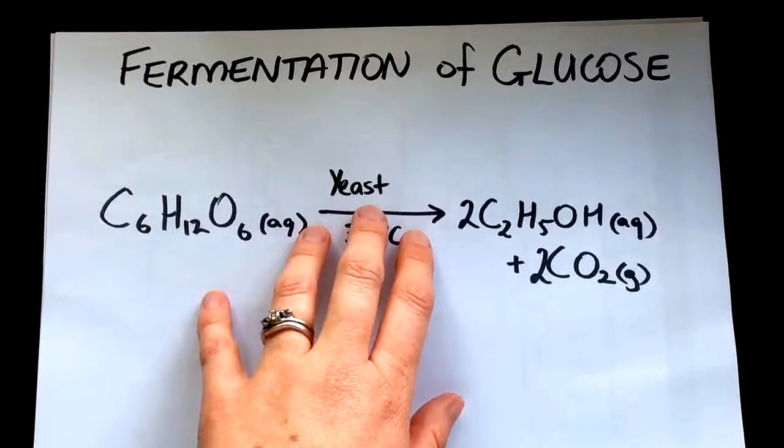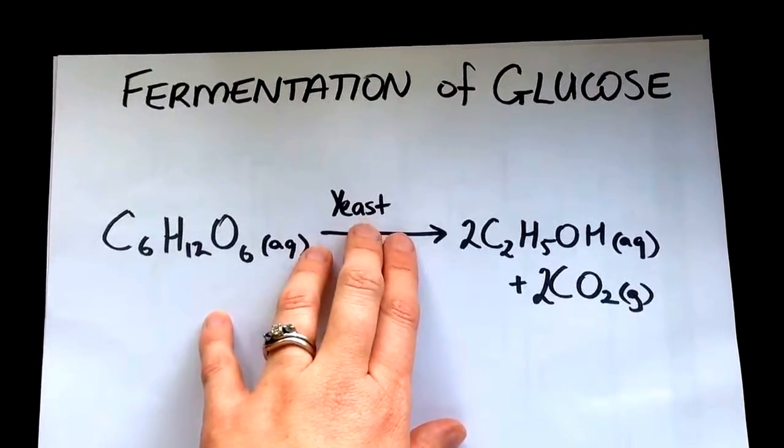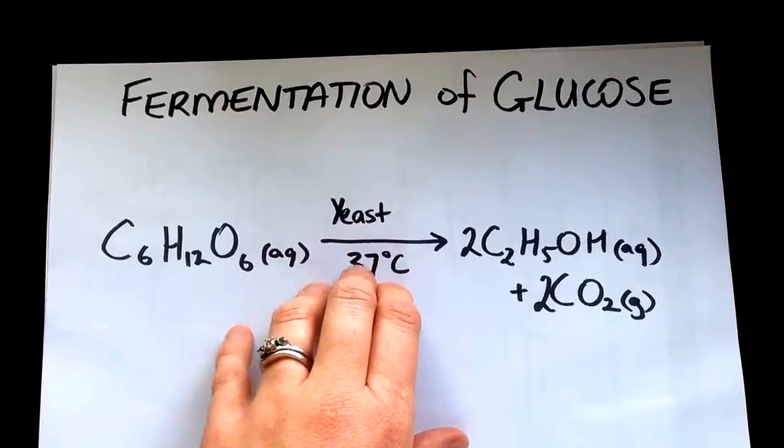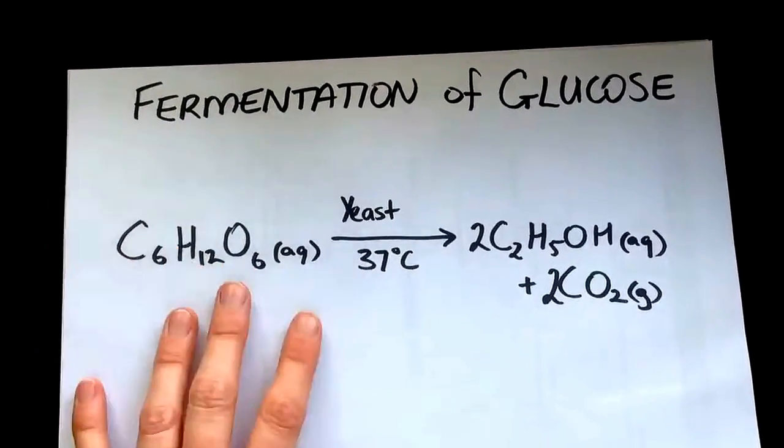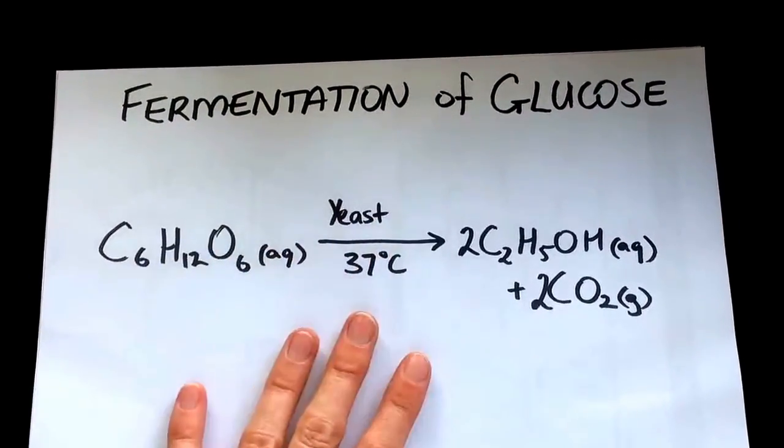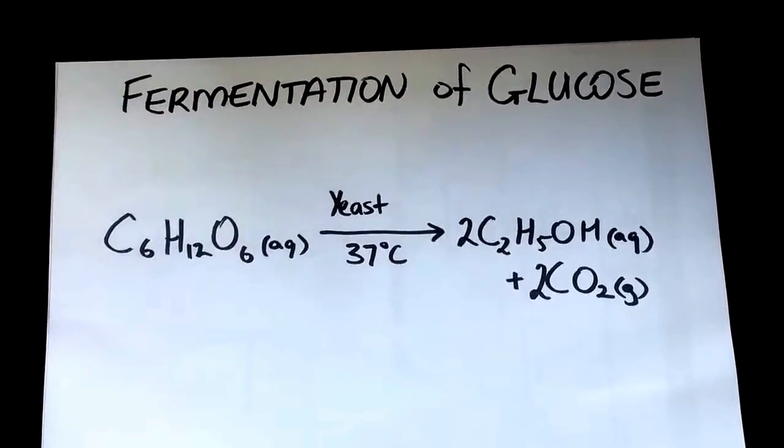We used yeast that has different enzymes that it produces which break down the sugars. We actually used glucose powder. You can also use sucrose because yeast produce a number of different enzymes and another one of those will break it down.